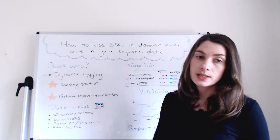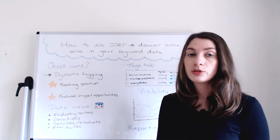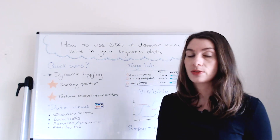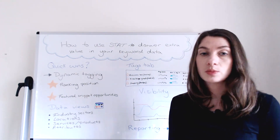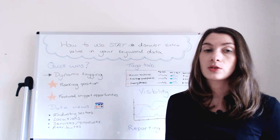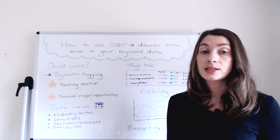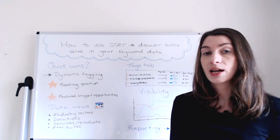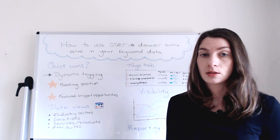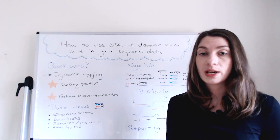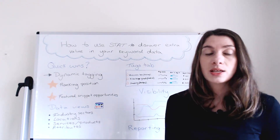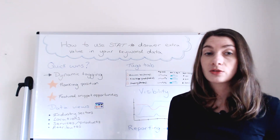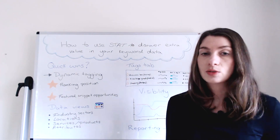So where are the quick wins here? We know that usually improved ranking position means increased, or at least some uplift in, traffic for that term. Knowing where you sit on the SERPs and what features you're winning can make or break your content strategy. This is where STAT's dynamic tags can be hugely useful. Dynamic tagging allows you to group keywords together based on criteria you've set, and that group is then automatically populated daily with keywords based on changeable filter criteria.